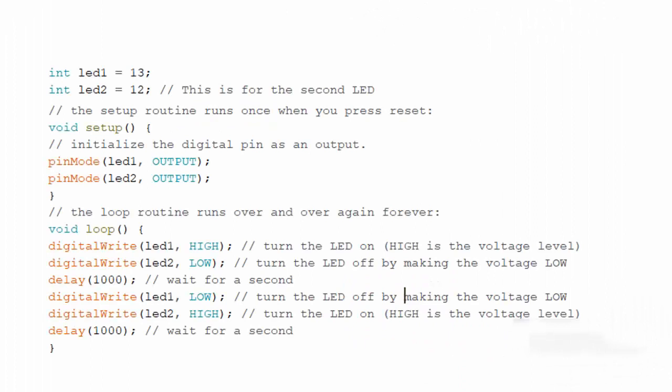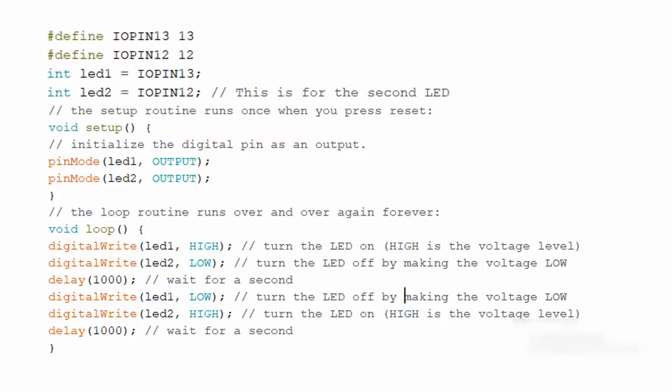Consider the following code example which is alternate LED blink program discussed previously. Now, look at these two statements. For a beginner, numbers 12 and 13 do not make any sense. Now, change this part of the code like this. Now, the data definitions at least give some idea of what the numeric values 12 and 13 mean in the program. Plus, it makes the purpose of led1 and led2 a little more clear.